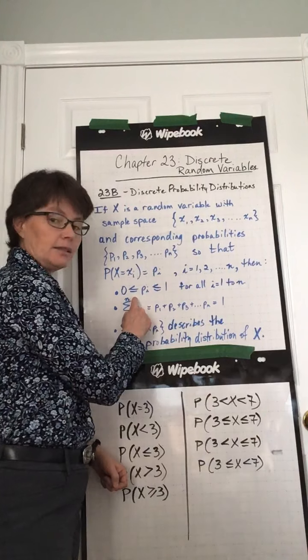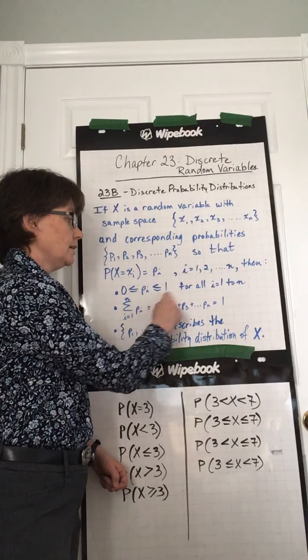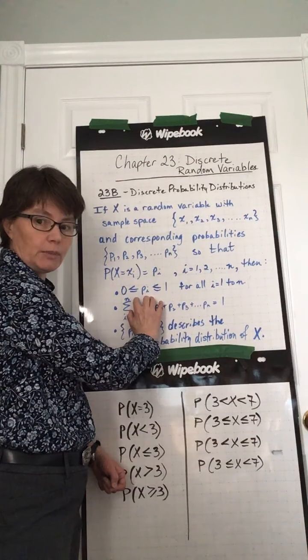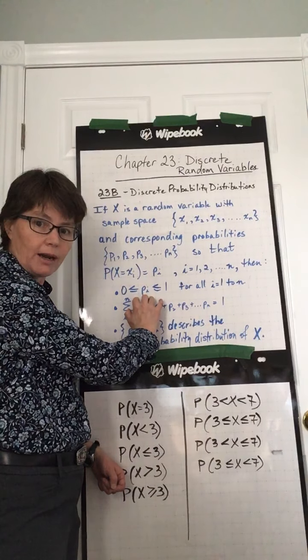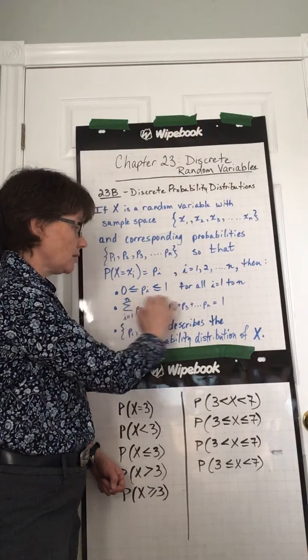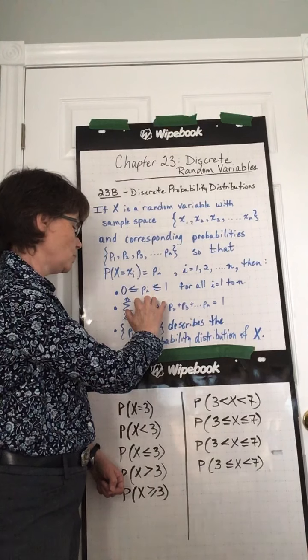0 is less than or equal to pi is less than or equal to 1 for all i equals 1 to n. What does this actually mean? This means what we talked about before. Every single probability has to be between 0 and 1. Each probability has to be between 0 and 1.